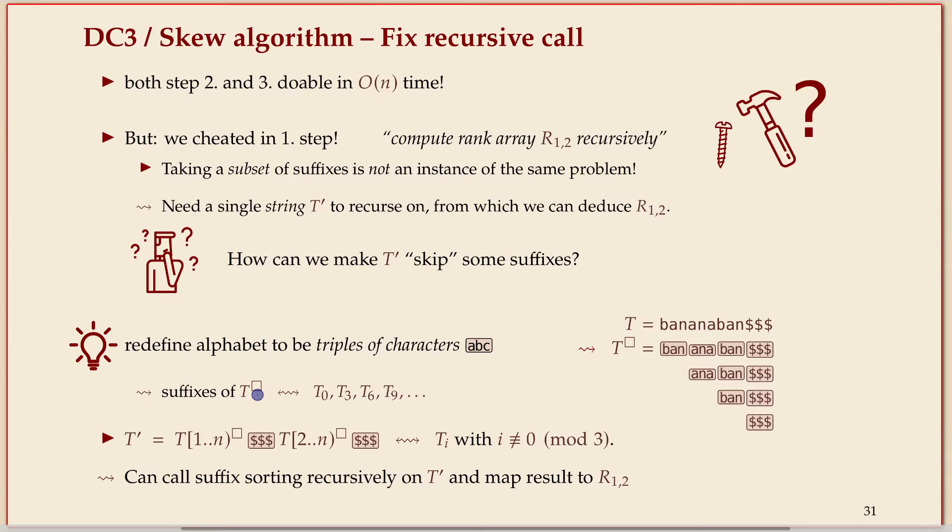We can take the suffixes of this T boxed where you pair characters up in triples, and that would give you exactly the suffixes that start at a multiple of three. So the suffixes of T box is exactly the suffixes of the original text that start at multiples of three. That's great, but that's not quite what we needed. What we need is R₁,₂, we need those that don't start at a multiple of three, but a slight twist to this construction still works.